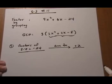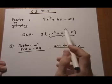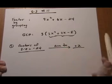Here we have another factor by grouping for a trinomial, so that means we're going to want to split the middle term up so that we have a total of four terms.